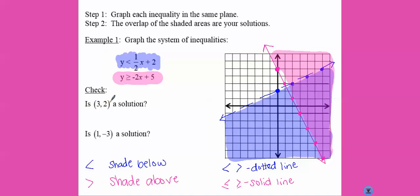So is three, two a solution? One, two, three, one, two, right there. Is that a solution? Yes, because it's in both colors. Is one negative three a solution? One, negative three. No, it's only in one color.